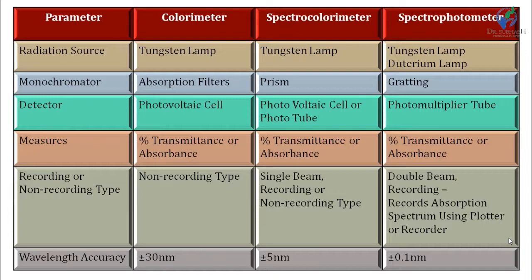All of these instruments measure percentage transmittance or absorbance of a sample. Regarding recording type: recording means we can store results in hard copy or soft copy; non-recording type means we cannot store results — we just read the value from the display. Colorimeters are non-recording type; we just note down the percentage transmittance or absorbance. Spectrophotometers may be recording or non-recording, and spectrophotometers can record absorption spectra using a plotter or recorder.